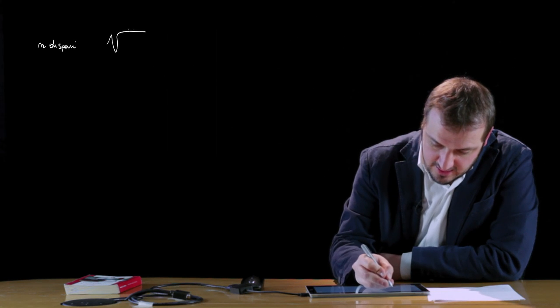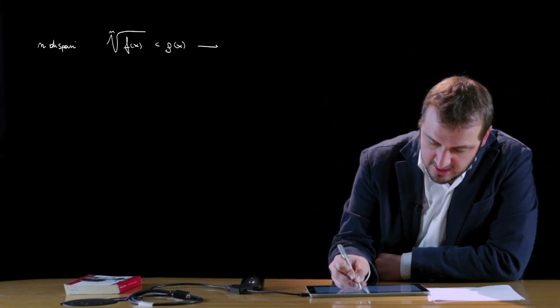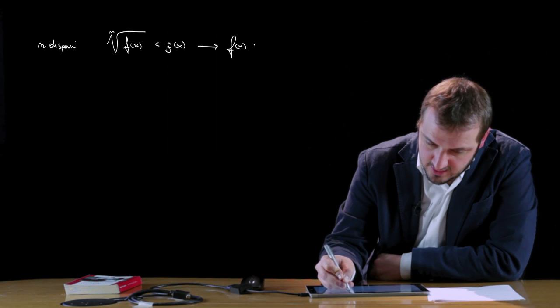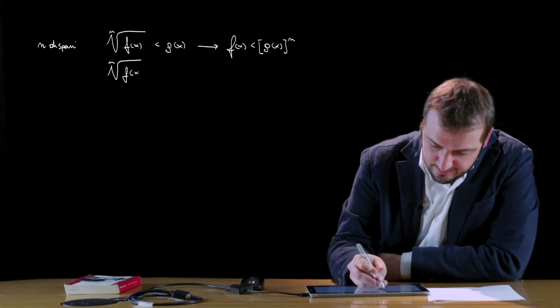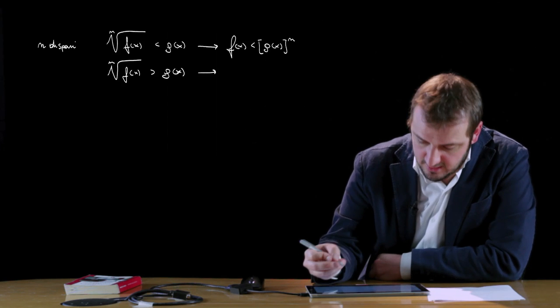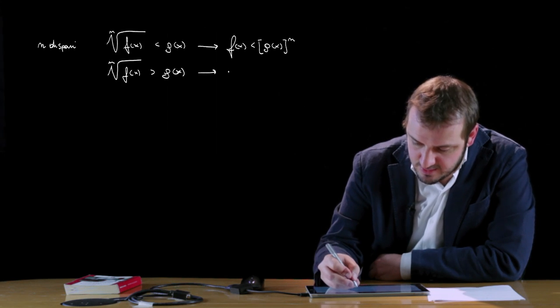Vediamo il caso più generale, in cui abbiamo la radice ennesima di f(x) minore o maggiore di g(x). Anche in questo caso differenziamo n. Se n è dispari, la disequazione radice ennesima di f(x) minore di g(x) si studia elevando semplicemente alla n primo e secondo membro, esattamente come visto con la costante. Lo stesso vale per il caso in cui il radicale deve essere maggiore di g(x): basta elevare alla n primo e secondo membro.